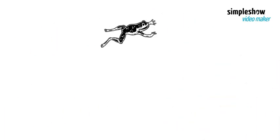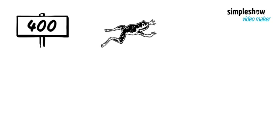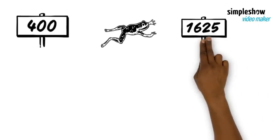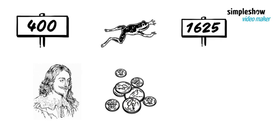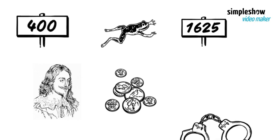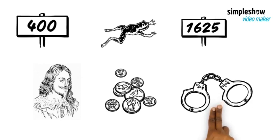Let's jump 400 years later to 1625. King Charles I tried to enforce a tax on the people of England to pay for a war with Spain. When members of the ruling class refused to pay, they were thrown in jail.